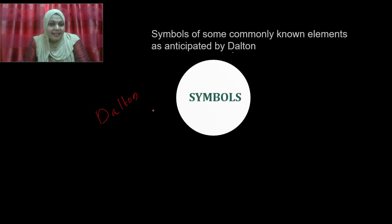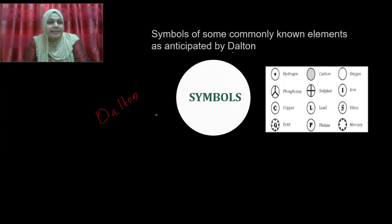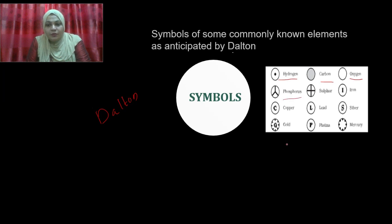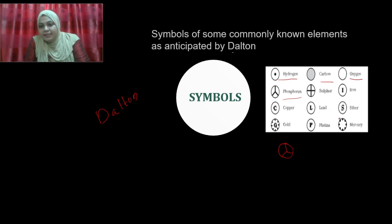Here you can see a table of some element symbols proposed by Dalton. You can see the symbols of hydrogen, carbon, oxygen, phosphorus, sulfur, iron, copper, and lead. Lead is easy — only capital L with S inside a circle. Silver is similar, with capital S inside a circle. Also gold, platinum, and mercury. At that time, only a few elements were known.